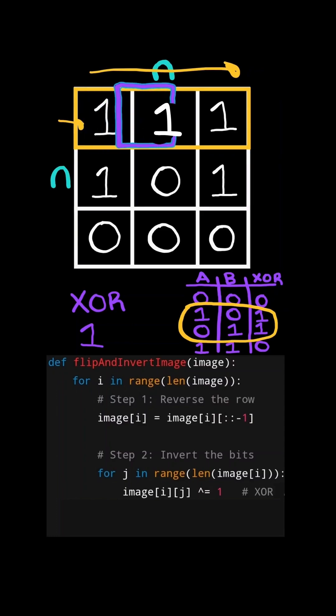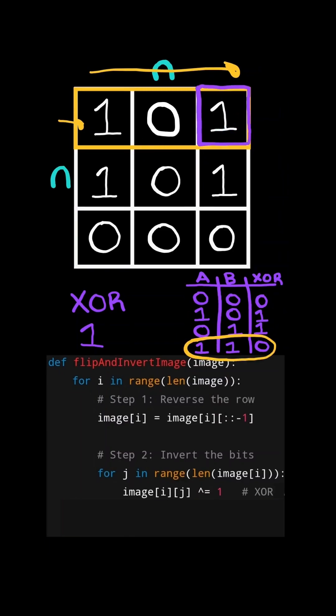And we continue iterating through the next cell. Now notice 1 XOR 1 is 0. So we will update the cell to the result of the XOR operation 0. And we continue to the next cell. Now notice 1 XOR 1 is 0. So we will update the cell to the result of the XOR operation 0.